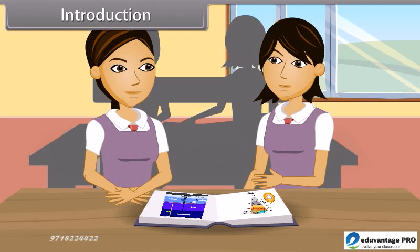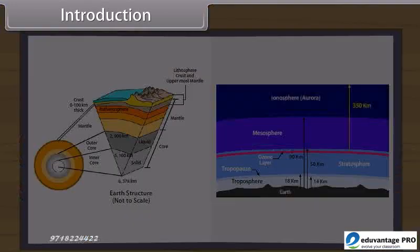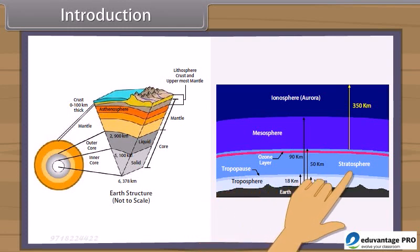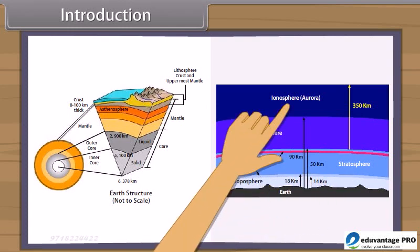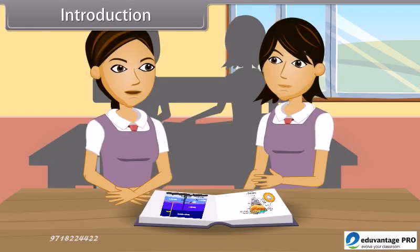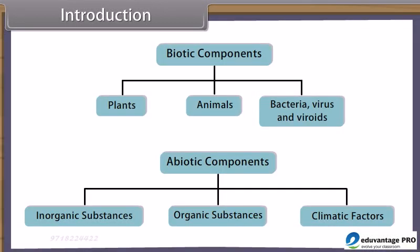Atmosphere includes the gaseous cover around the hydrosphere and lithosphere like a blanket, extending to several kilometers in height from the surface of Earth. It is differentiated into four parts: troposphere, stratosphere, ozonosphere, and ionosphere. Biosphere is formed mainly of two components: biotic components — all living things — and abiotic components — air, water and soil.